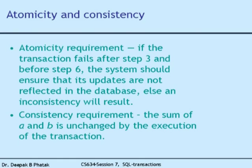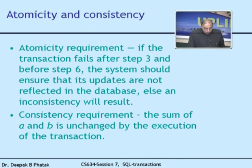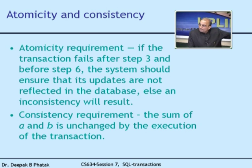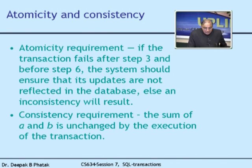If the transaction fails after step 3 and before step 6, the system should ensure that updates are not reflected in the database, otherwise an inconsistency will result. Step 3 is completion of the reduction on account A; step 6 is completion of the update of account B. The consistency requirement is simply: the sum of A and B is unchanged by the execution of the transaction.